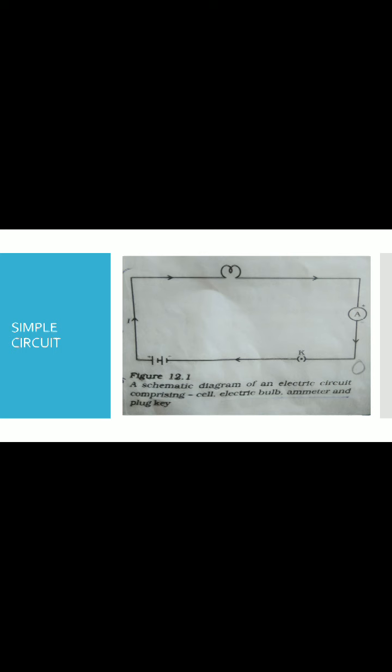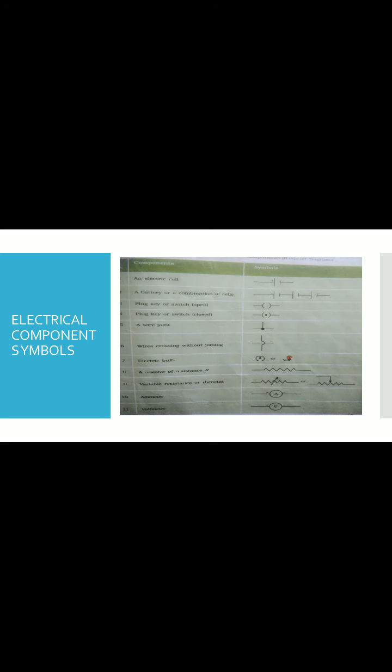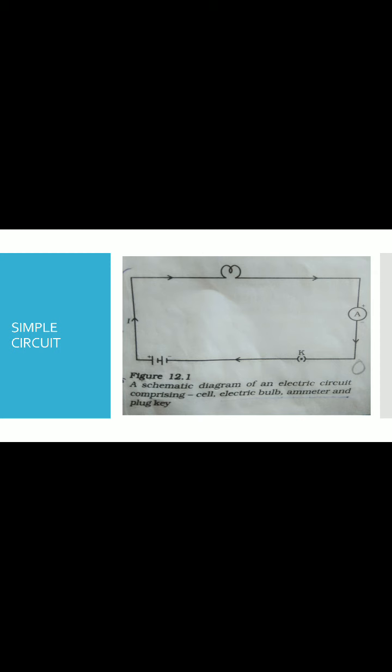Simple circuit. So simple circuit consists of a bulb, ammeter, battery, switches, and wire.